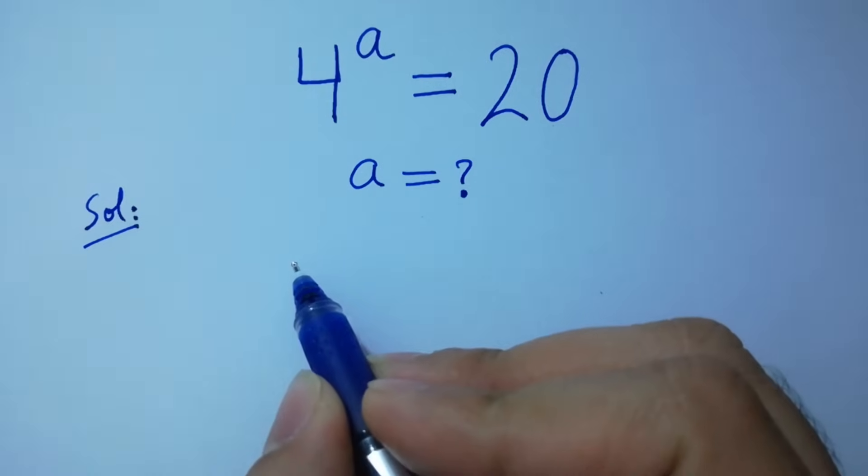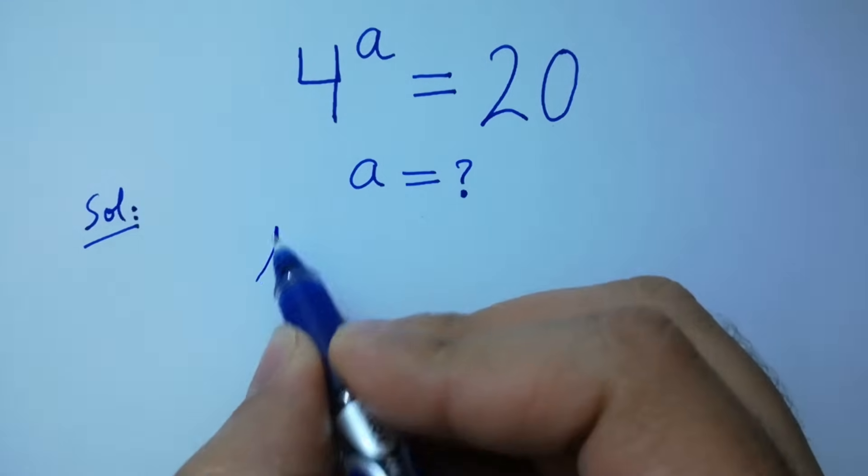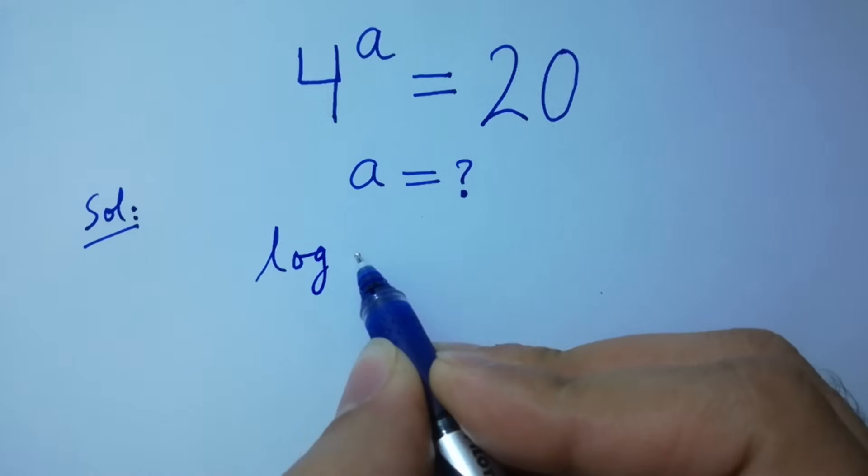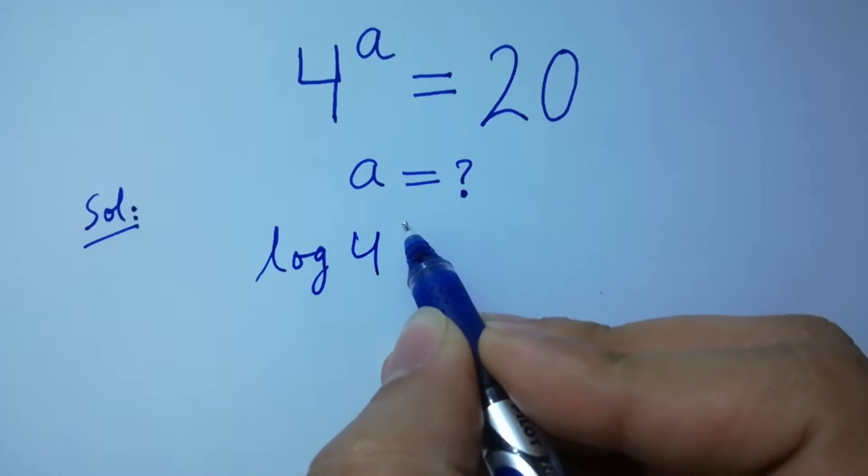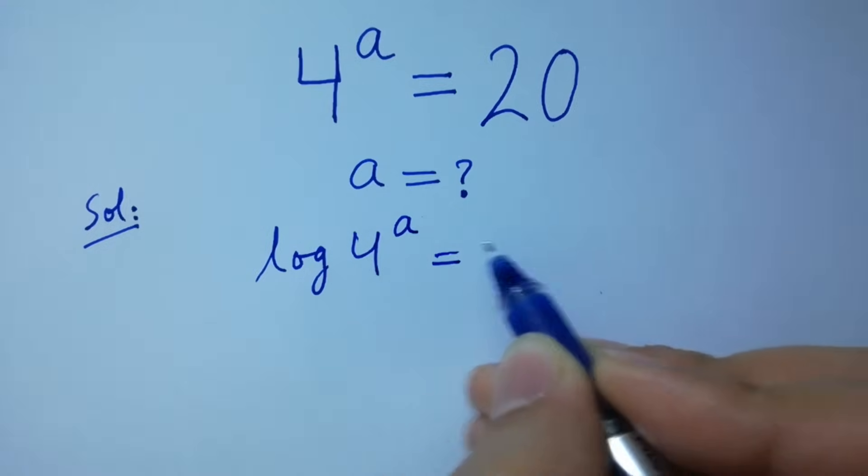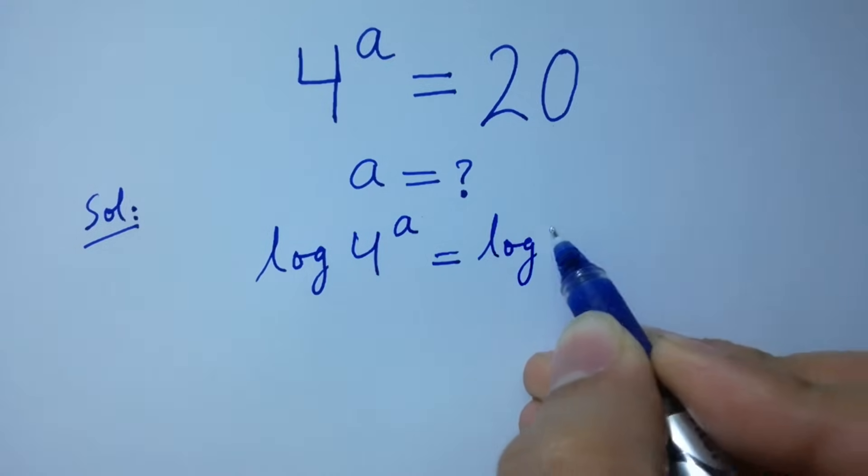Take log on both sides. Log 4 to the power a equals log 20.